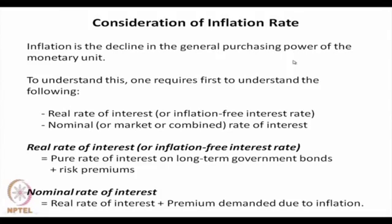We will not discuss much about this; instead we pass on to the next topic which is the consideration of the inflation rate. Recall that in our definition of minimum attractive rate of return, we did not consider any inflation. But the fact remains that when somebody decides on the minimum attractive rate of return, it does consider the inflation rate, the risk premium, and the minimum interest obtainable by investing in long-term government bonds. So what we are now defining is that there are two types of interest we can consider.